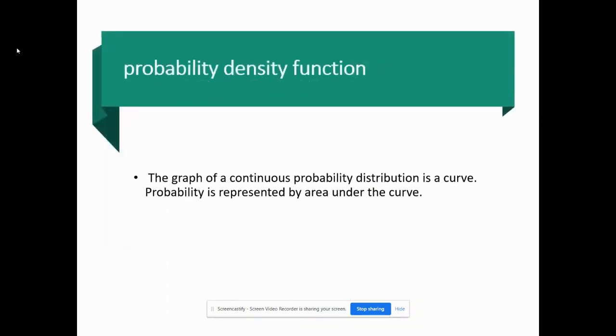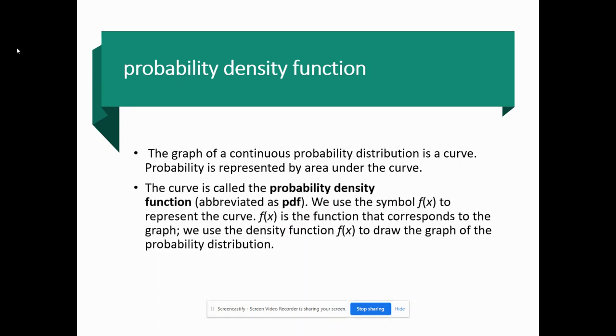We're going to talk about the probability density function. The graph of a continuous probability distribution is a curve. Think of the normal distribution curve that you saw in introductory stats - that really pretty bell-shaped curve. We tried to make estimations about what goes on under the curve so we could make probabilities for certain groups of people, animals, stuff like that.